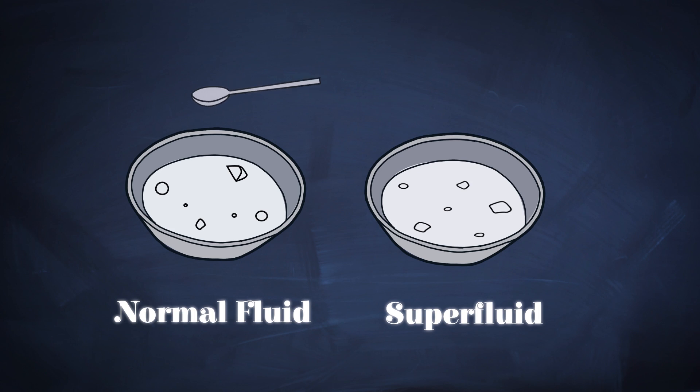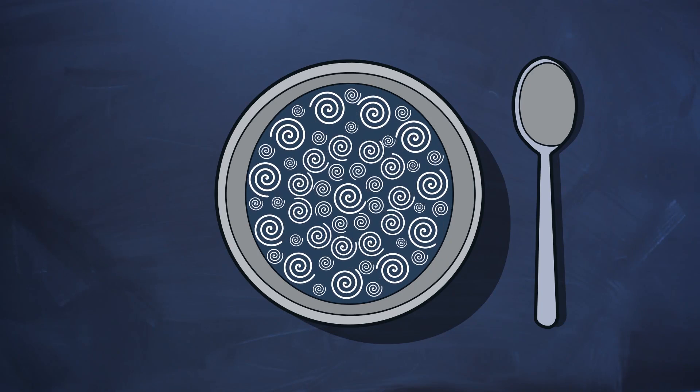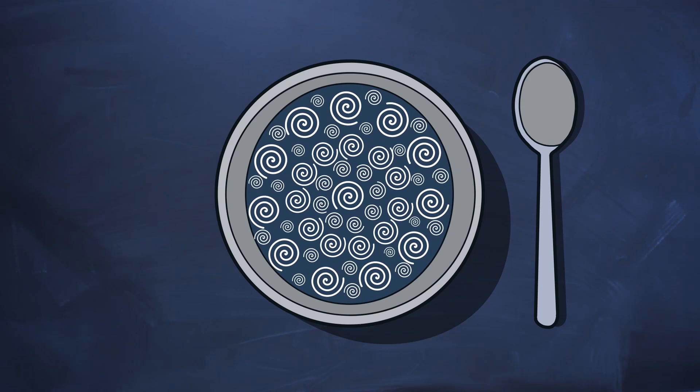If you had to take a bowl of soup and set it in rotation, the soup in the bowl would rotate as a whole and form a single large vortex. However, if the rotating bowl had superfluid in it, then it's not that one big vortex is formed, but instead these tiny vortices are formed and they are large in number and rotational energy is trapped in these tiny vortices.